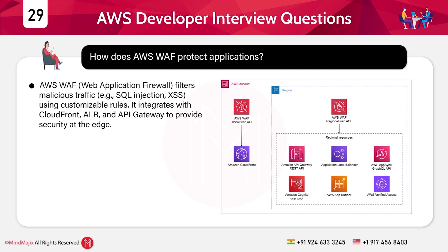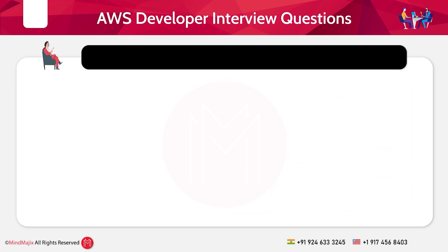Question 29: How does AWS WAF protect applications? Answer: AWS WAF, or Web Application Firewall, filters malicious traffic — for example SQL injection and XSS — using customizable rules. It integrates with CloudFront, ALB, and API Gateway to provide security at the edge.